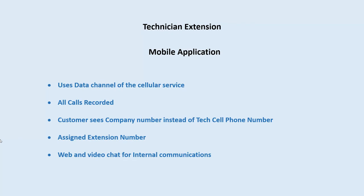All calls are recorded — every call in this system is recorded in and out. The customer sees the company number instead of the tech's cell phone number through call masking; when your technician calls a customer, your office number shows on their phone. The technician has an extension in the system for dialing and management, and you can manage both cell phones and office phones all in one place.